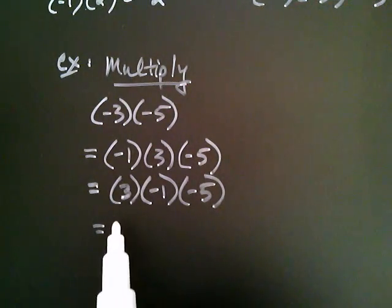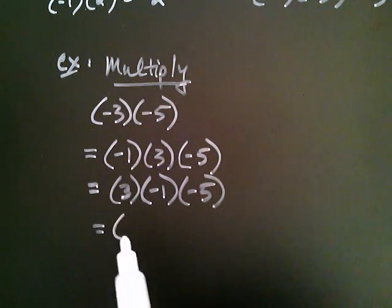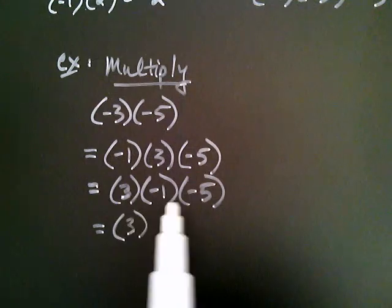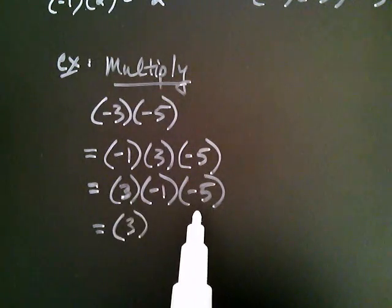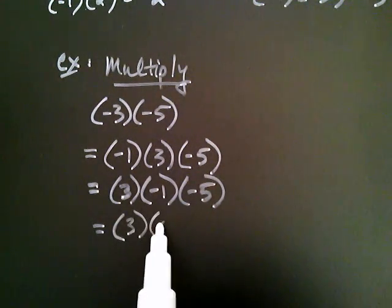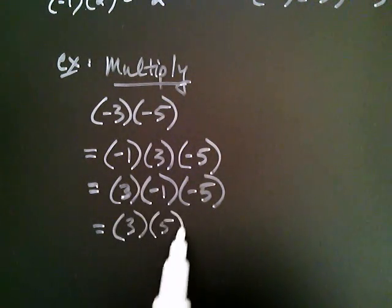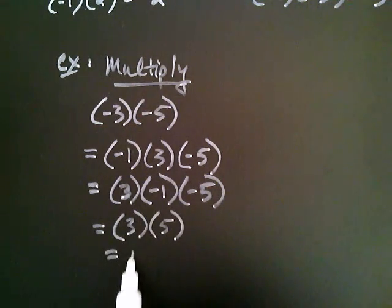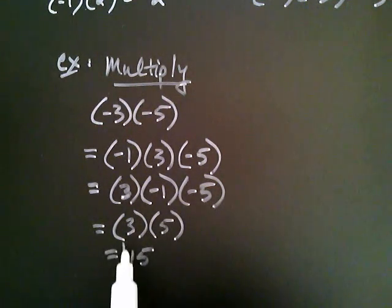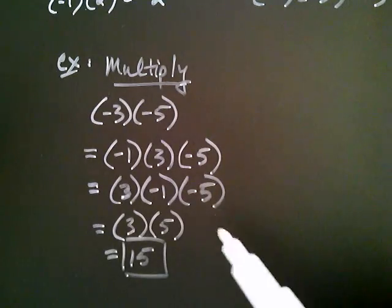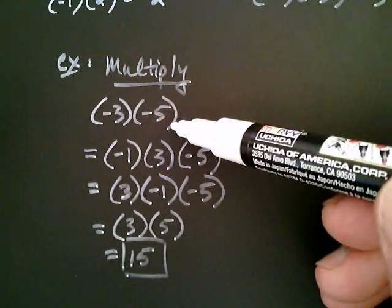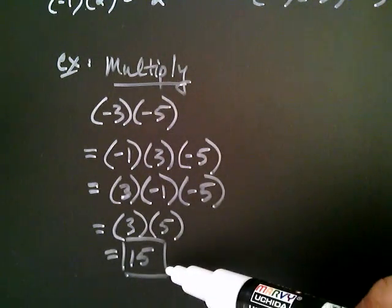So with the three left alone, negative one times negative five is positive five. Now I'm left with three times five, which equals fifteen. And I can see that a negative times a negative gave me a positive.